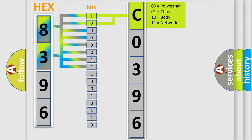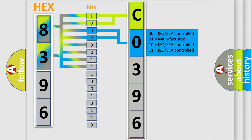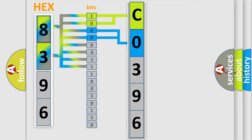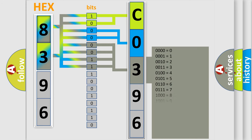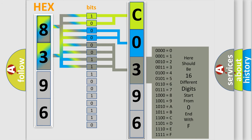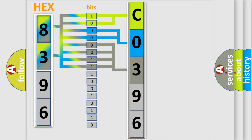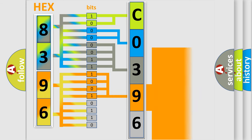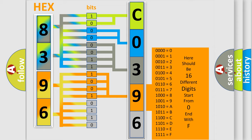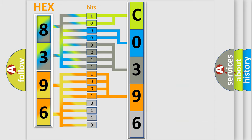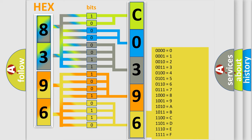The next two bits determine the second character. The last bit styles of the first byte define the third character of the code. The second byte is composed of a combination of eight bits. The first four bits determine the fourth character of the code, and the combination of the last four bits defines the fifth character. A single byte conceals 256 possible combinations.